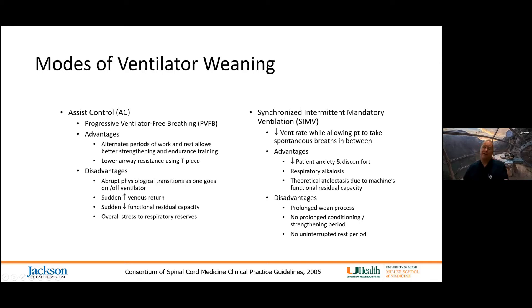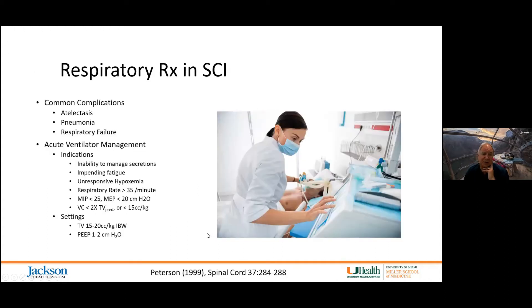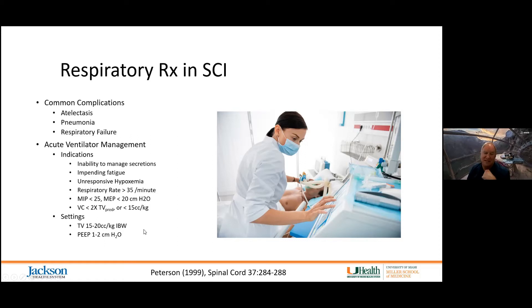Remember that anabolic potential is significantly diminished after spinal cord injury, so they simply aren't resting sufficiently to strengthen the diaphragm and intercostal muscles. The Peterson protocol recommends assist control mode with tidal volumes of 15 to 20 cc per kilo of ideal body weight. Our pulmonology colleagues have great concern about these tidal volumes because they've been linked with acute respiratory distress syndrome.